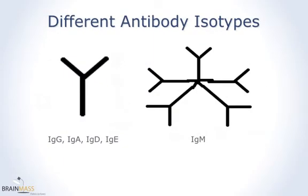There are several different antibody isotypes in humans and other animals. Most isotypes are found as monomers, or only one unit, and each monomer has two arms and can bind two antigens simultaneously. One type of antibody, IgM, is found as a pentamer, which has five units. Since each unit has two arms, there are a total of 10 antigen binding sites on this isotype.